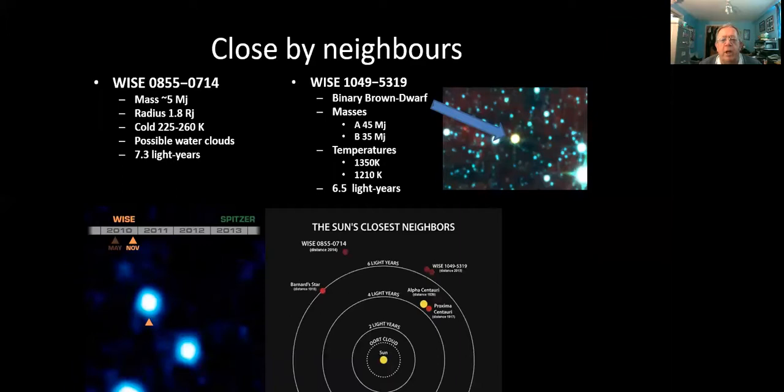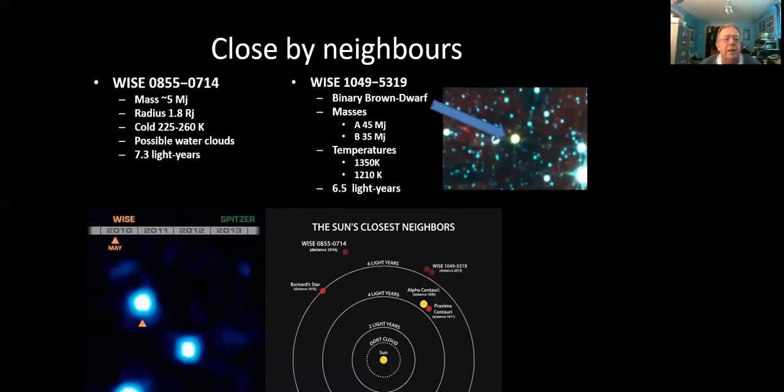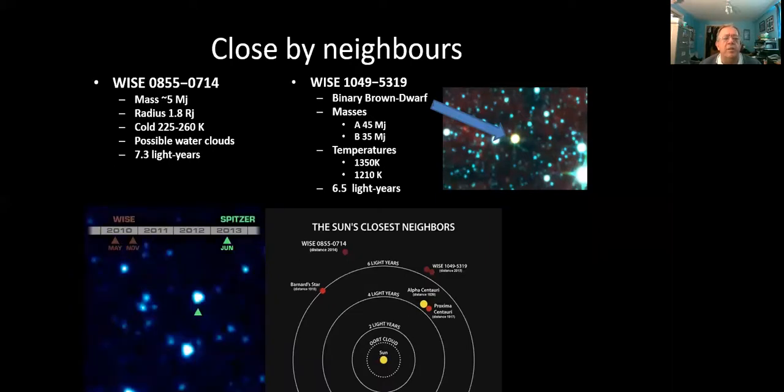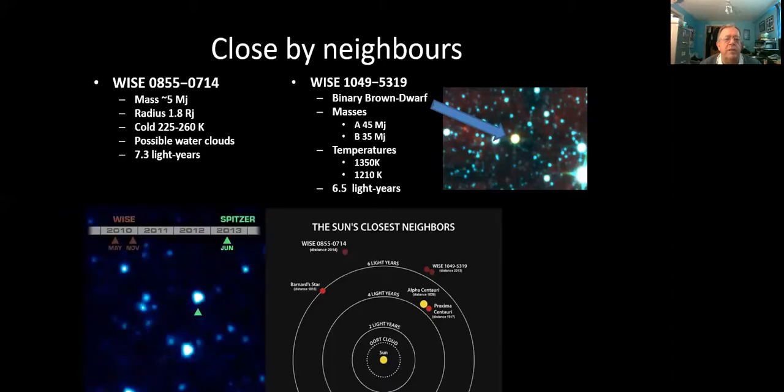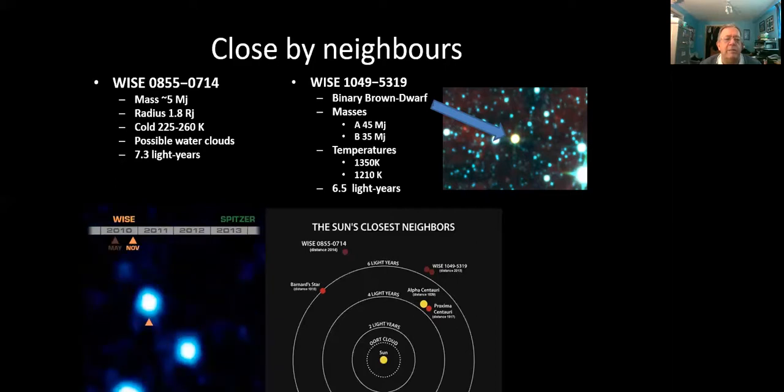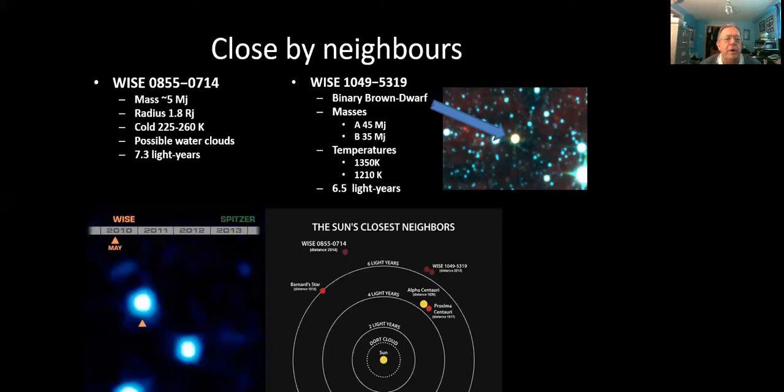We've got a couple that are fairly nearby the Sun. Again, nearby ones are easier to detect. The little animation there is the WISE 0855-0714 object, which is a 5 Jupiter mass planet. Again, 1.8 times the radius of Jupiter. So definitely a planet.